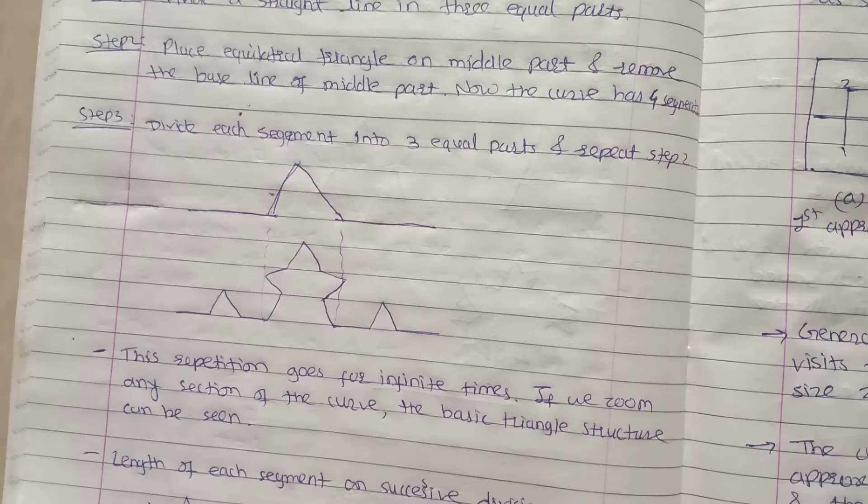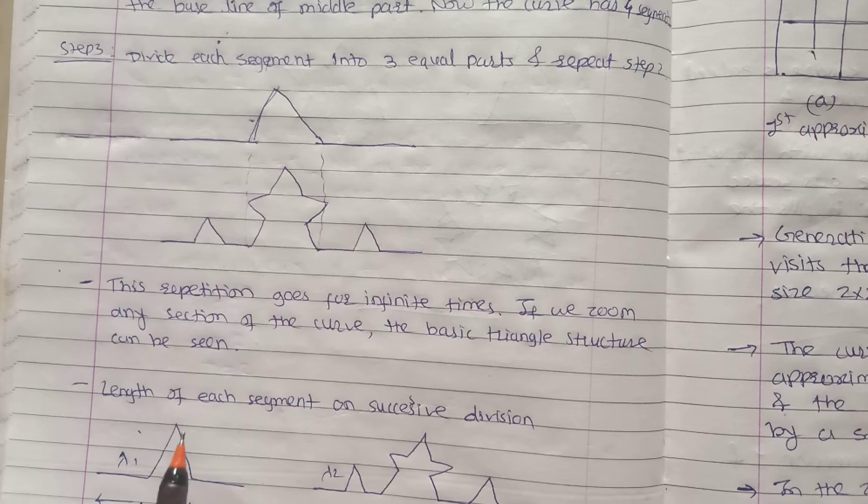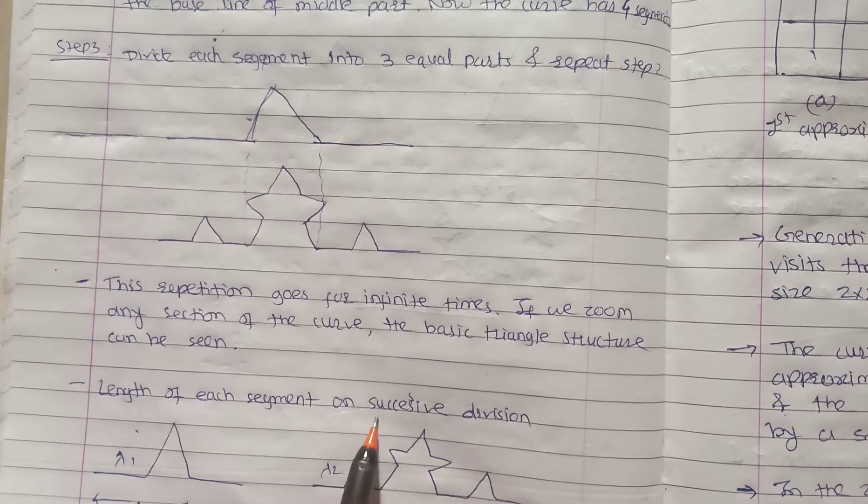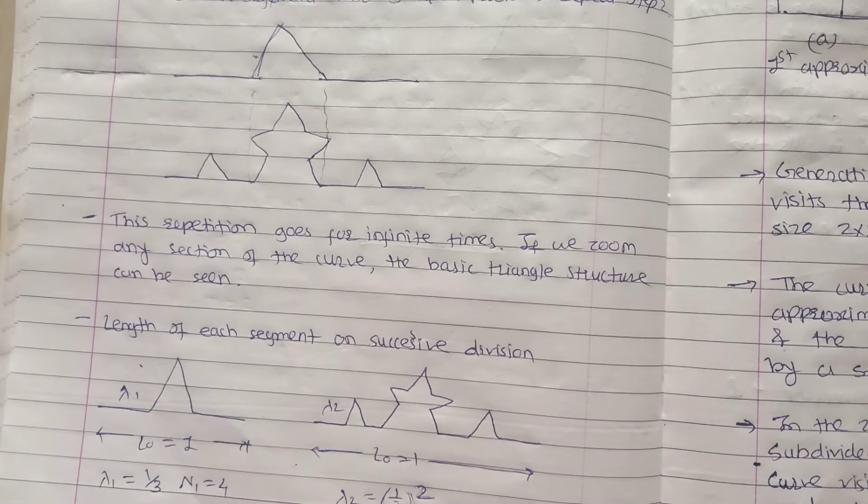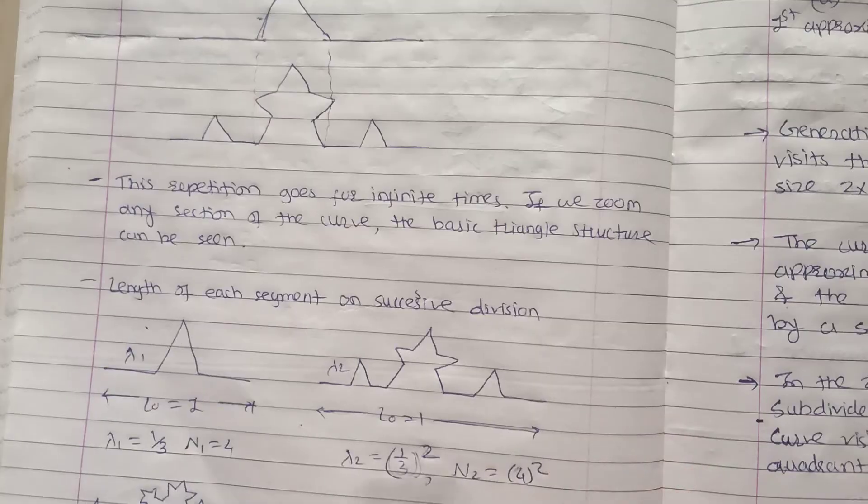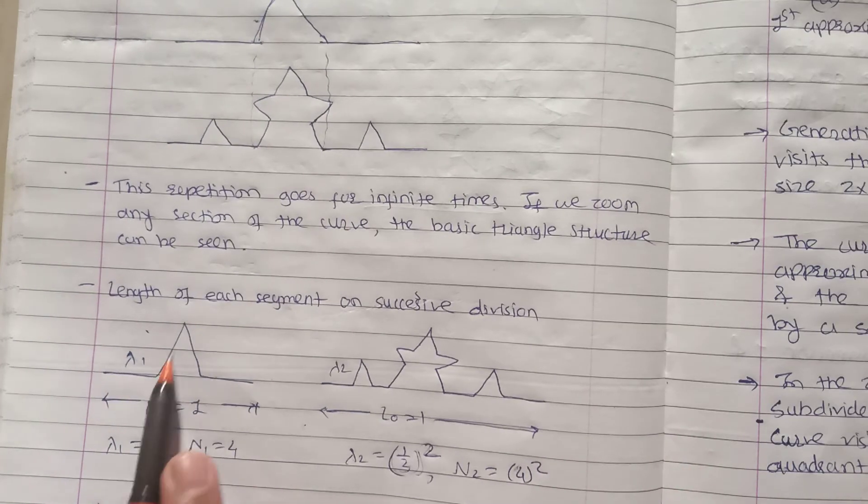So the length of each segment on successive division, that we have to find out. First line segment we have to divide and then replace with equilateral triangle. So what is the length of the line segment?